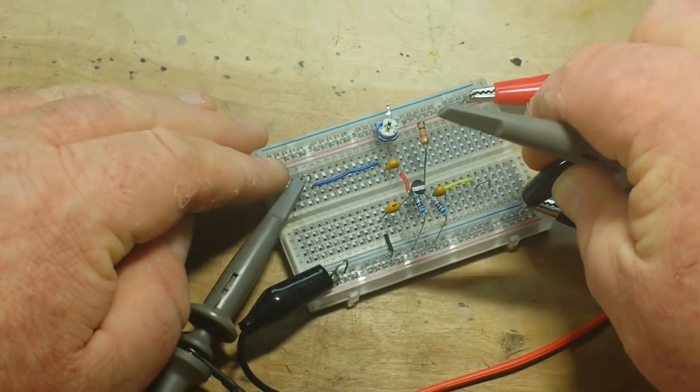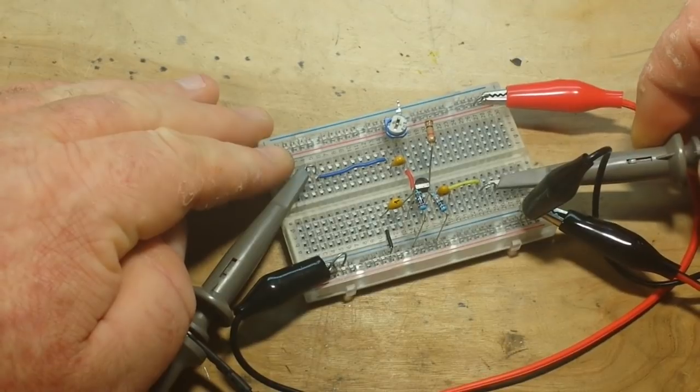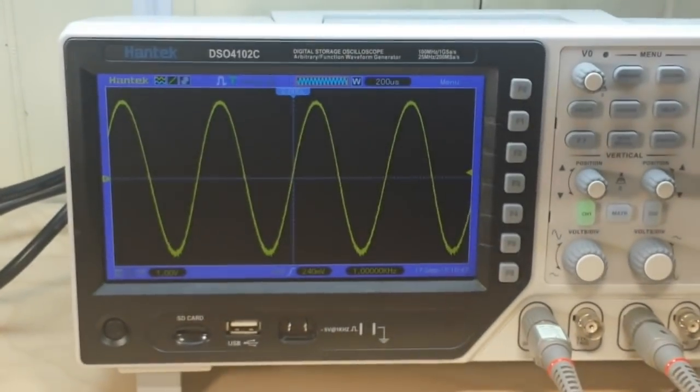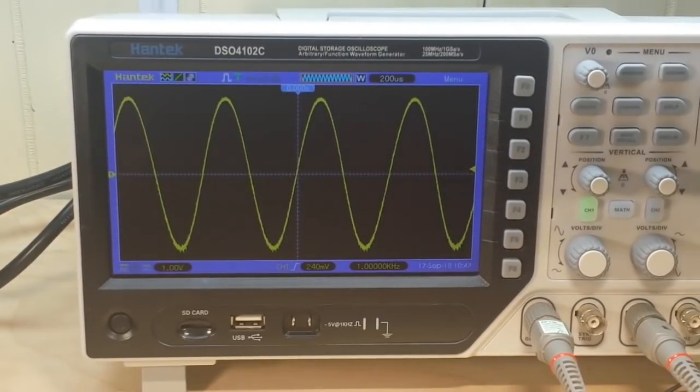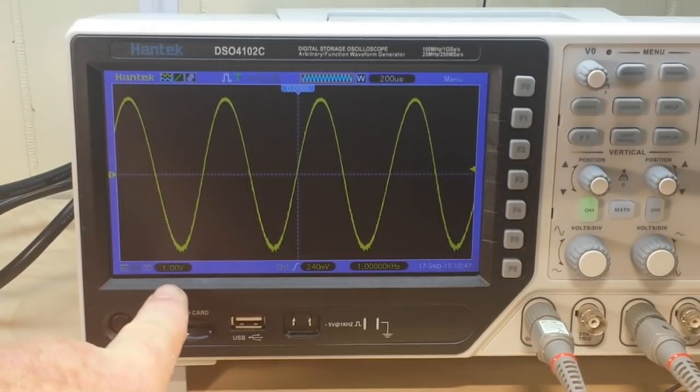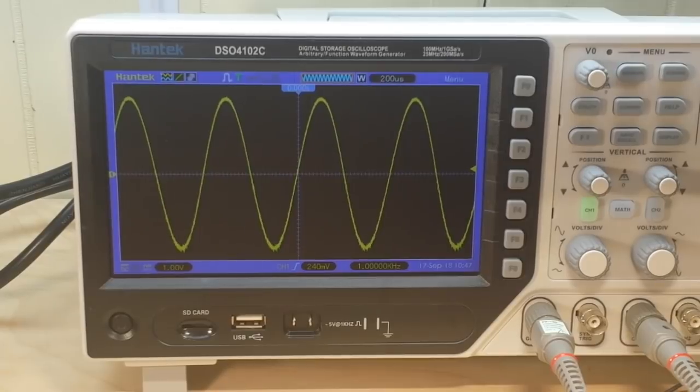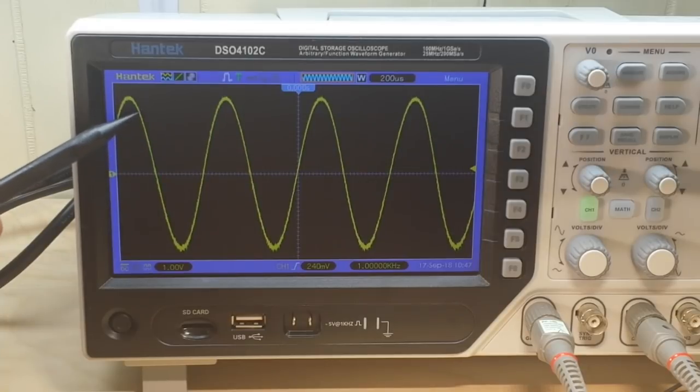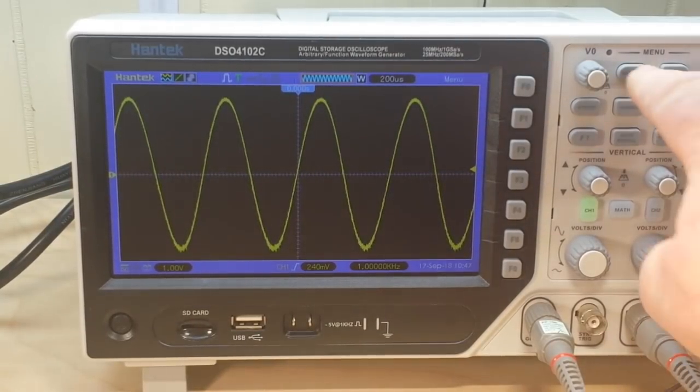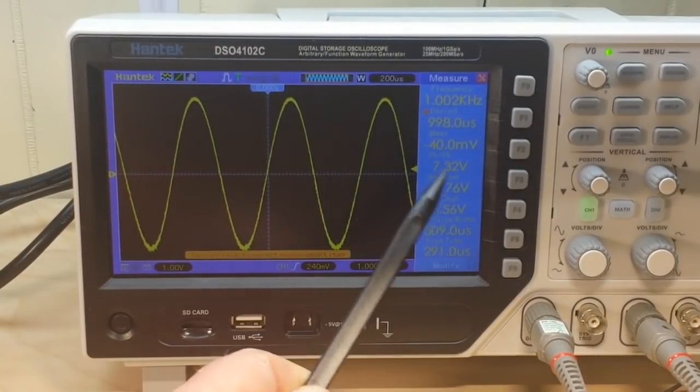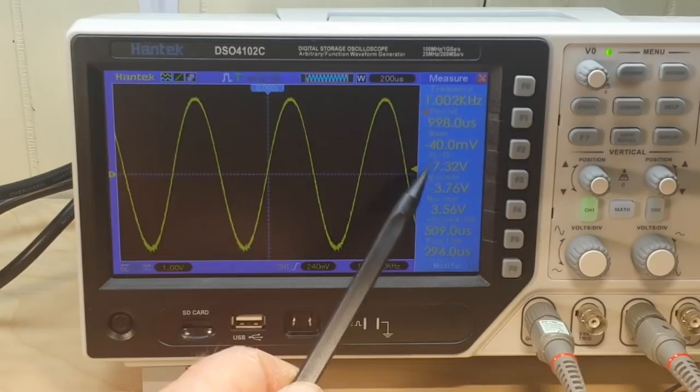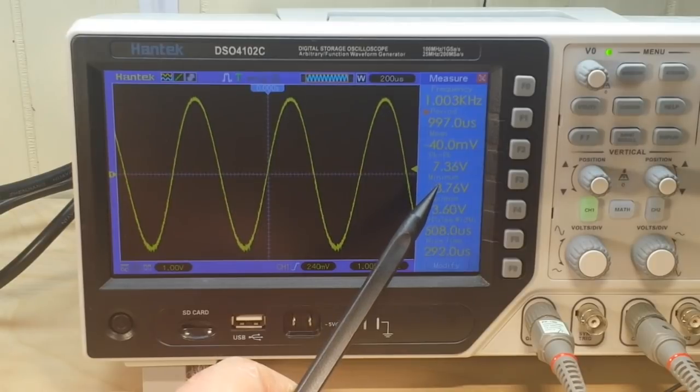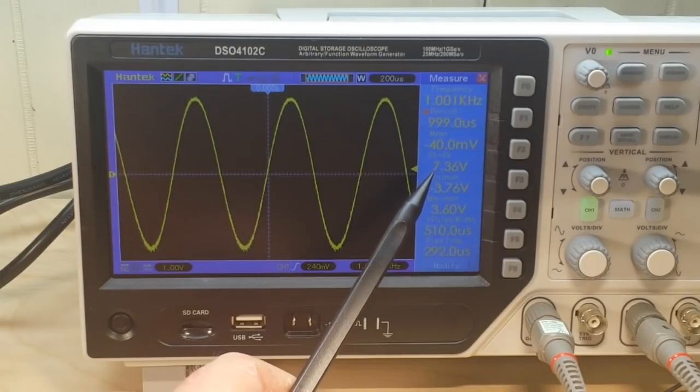Now let's switch it over here to the output of our circuit and take a look at that. There we go, now we're seeing our output to our circuit. So we're at 1 volt per division there, and we are 1, 2, 3 and a half divisions. We bring up our measure, we can see there's our frequency, there's our mean, and there is our peak to peak. Why does our peak to peak say minus 40 millivolts?